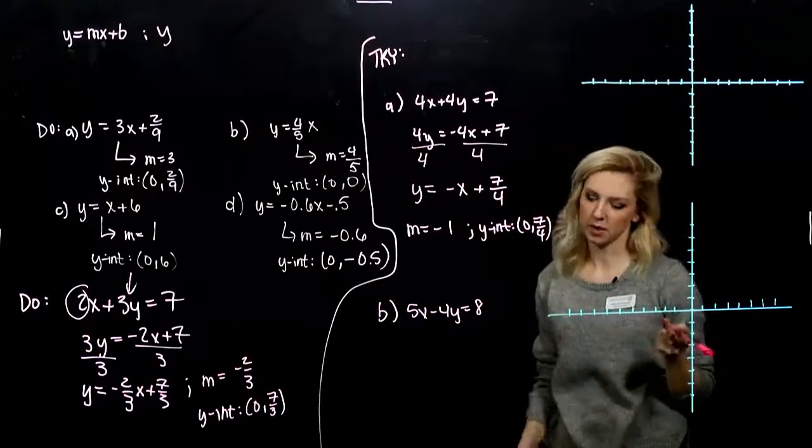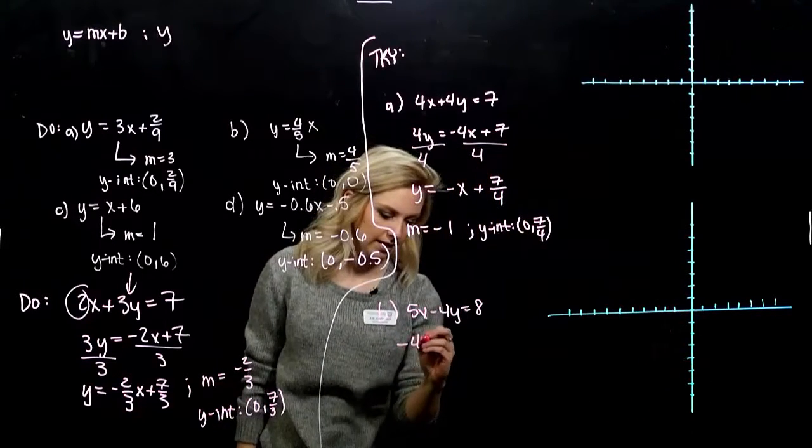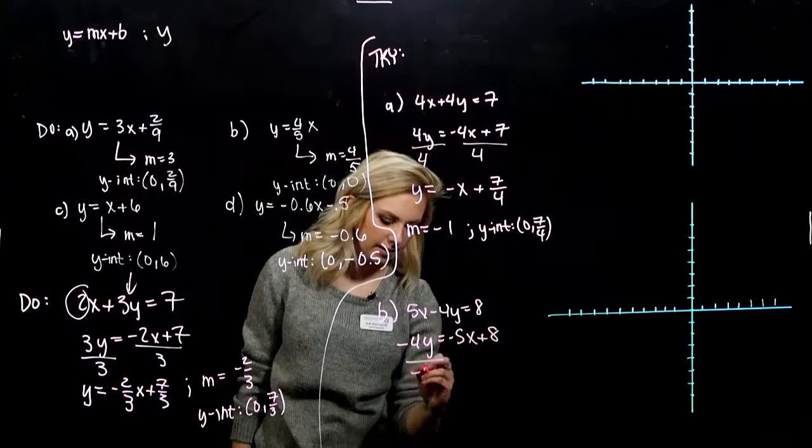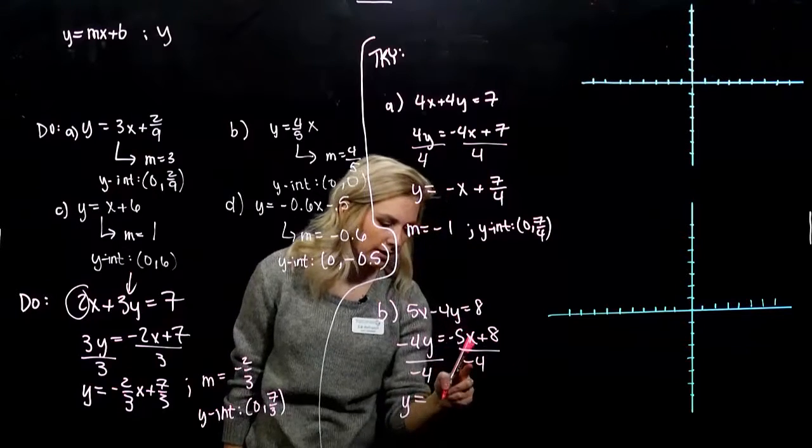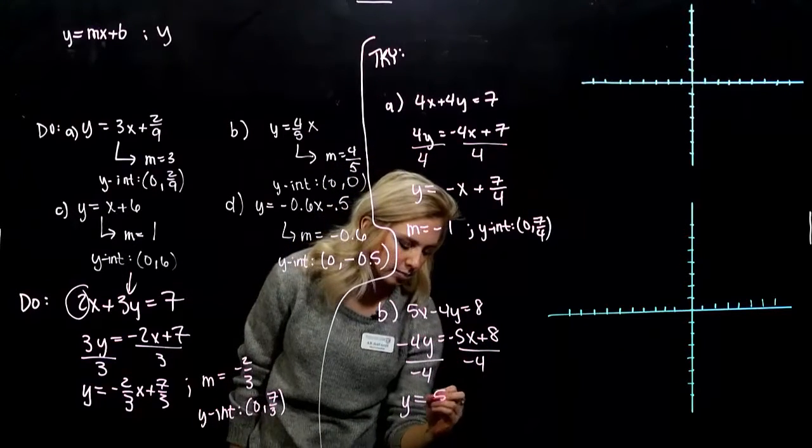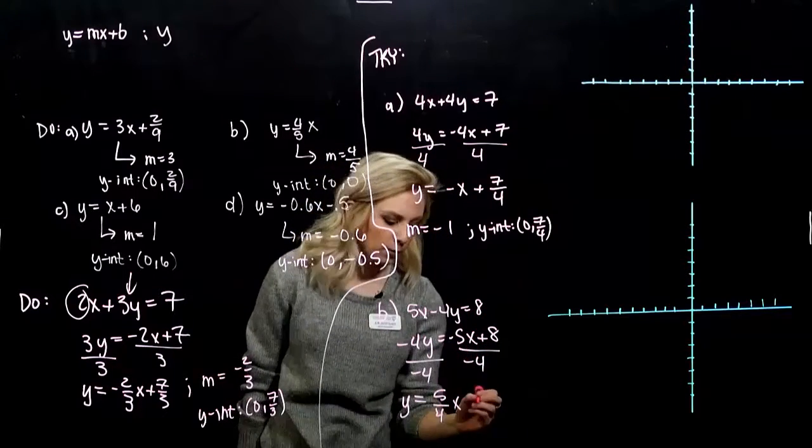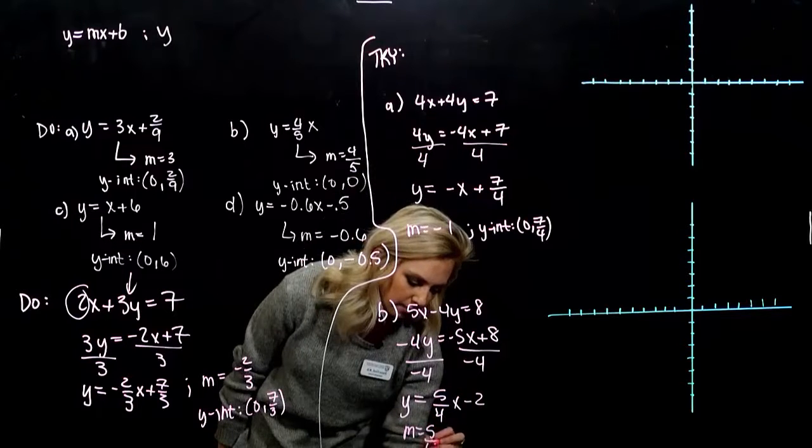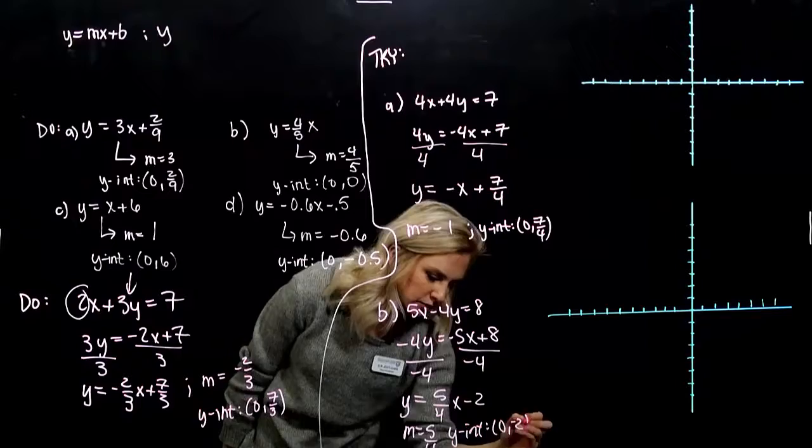Okay. Second one. Again, we want y on its own. So we need to subtract 5x, divide everything by minus 4. A minus divided by a minus. Negative divided by a negative gives us positive. And 8 divided by negative 4 gives me minus 2. So my slope was 5 fourths. Y-intercept was at 0 minus 2.